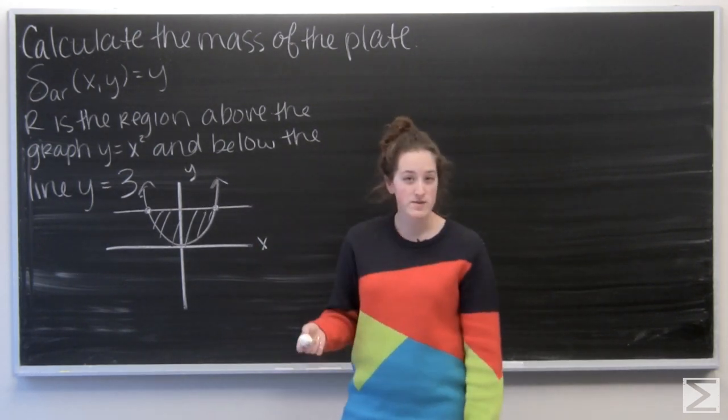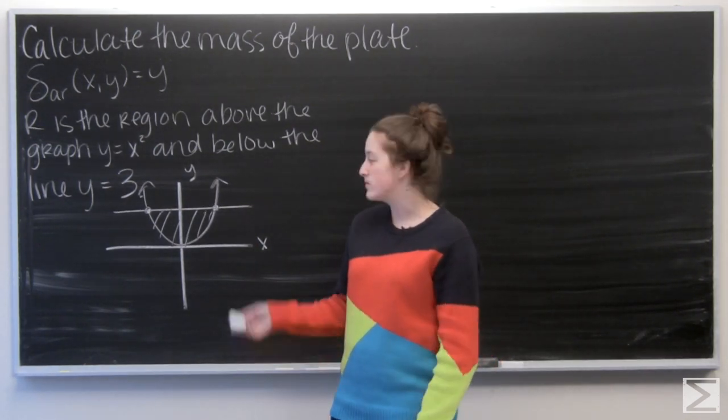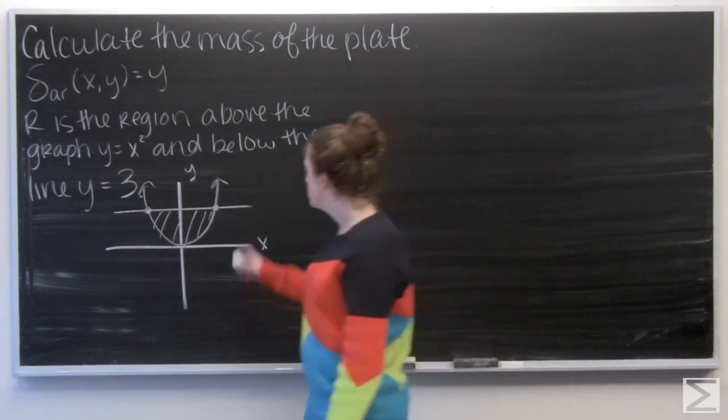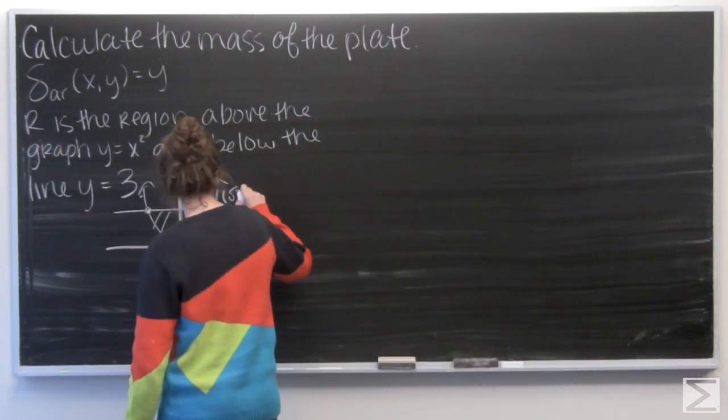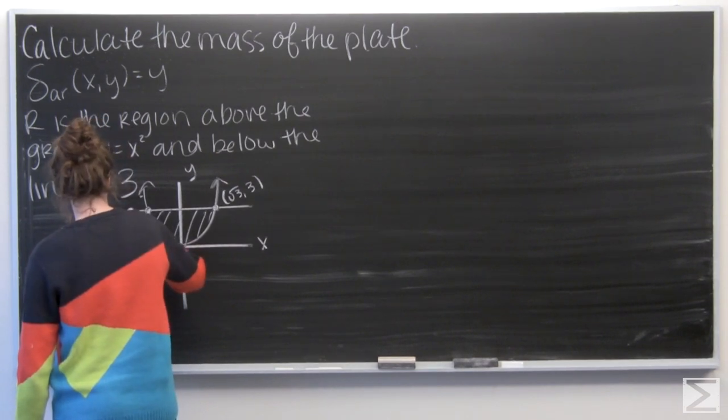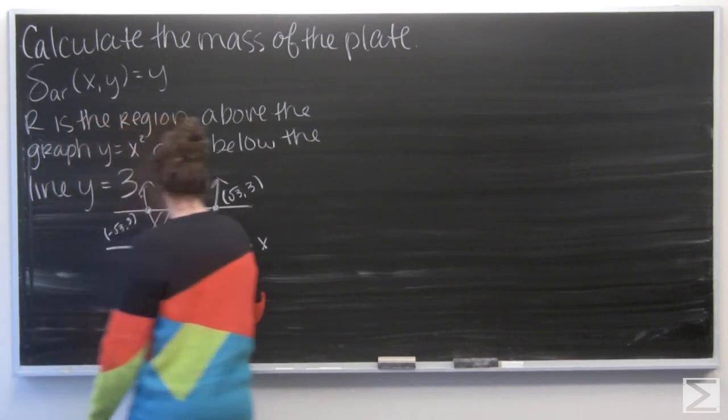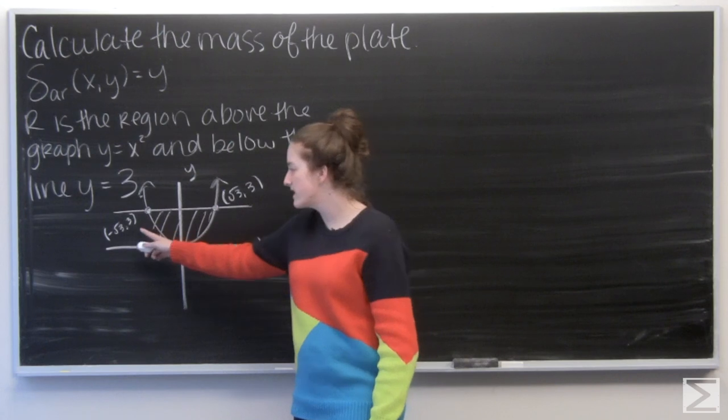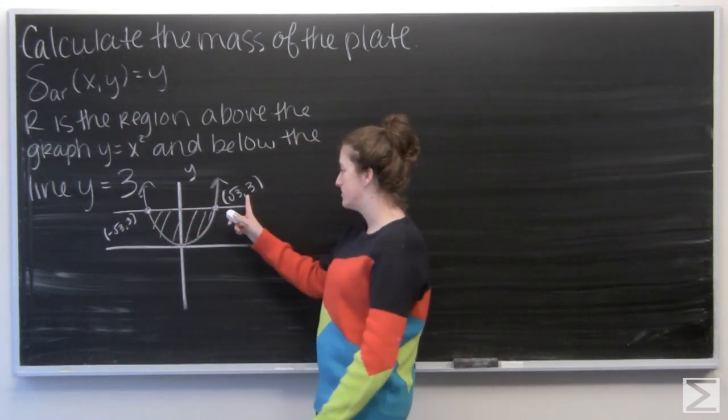Now I want to figure out where y equals 3 and y equals x squared intersect. Well, 3 equals x squared so x is going to be plus or minus the square root of 3. Okay, so negative root 3, 3 and square root of 3, 3.